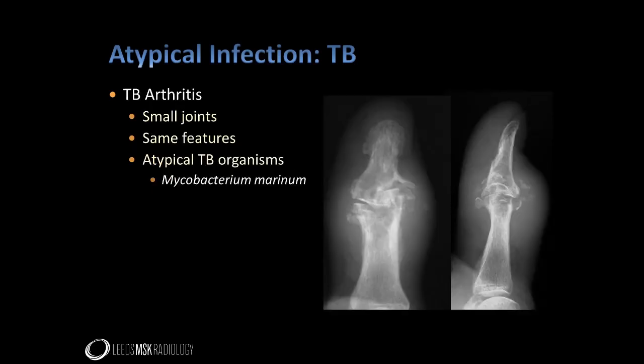Similar features are seen with mycobacterium affecting the small joints, as in this interphalangeal thumb joint. Note the severe bone destruction despite the preservation of joint space. There is also periarticular soft tissue calcification evident. This is an example of a well-recognised atypical mycobacterium infection carried by fish — mycobacterium marinum. Involvement of the hands is typical, the infection gaining access to the body through open wound contact with contaminated water, fish bites or injury with contaminated marine or angling equipment.